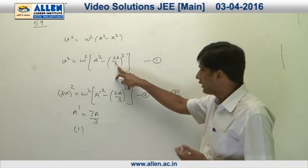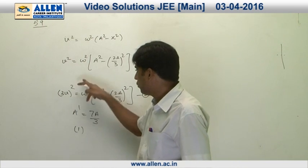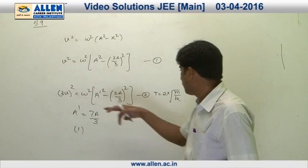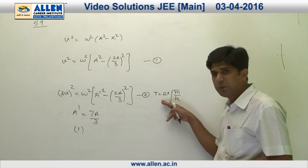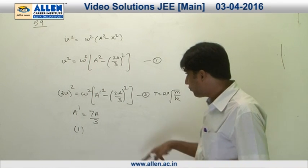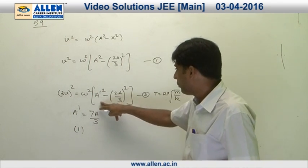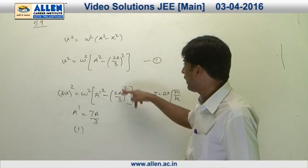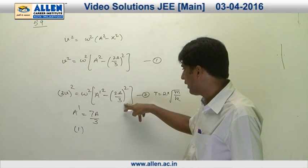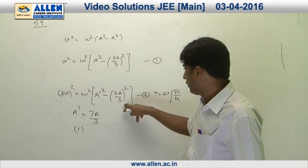In the second case, velocity becomes 3v. Omega remains the same because time period only depends on mass and k. The new amplitude is a', and the value of x remains the same, that is 2a/3.